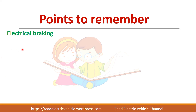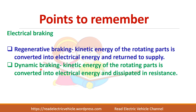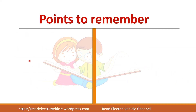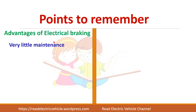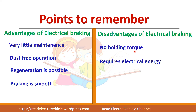To summarize: electrical braking systems are of three types — regenerative braking, dynamic braking, and plugging. In regenerative braking, the electrical energy is returned to the supply. In dynamic braking, it is dissipated in the resistance. In plugging, the armature connections are reversed to produce the braking torque. The advantages of electrical braking are: very little maintenance, dust-free operation, regeneration is possible, and smooth operation. The disadvantages are: no holding torque, and it requires electrical energy for operation.